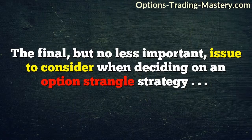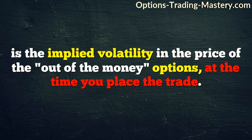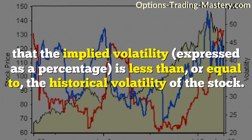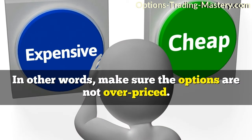The final, but no less important, issue to consider when deciding on an option strangle strategy is the implied volatility in the price of the out of the money options at the time you place the trade. You need to compare the implied volatility in the options with the historical volatility of the underlying stock, and ensure that the implied volatility, expressed as a percentage, is less than or equal to the historical volatility of the stock. In other words, make sure the options are not overpriced.